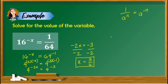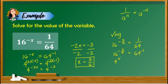To check if x equals 3 halves is correct, substitute into the original equation: 16 raised to negative 3 halves equals 1 over 64. Rewrite 1 over 64 as 64 raised to negative 1, and rewrite with base 4: 4 raised to 2 times negative 3 halves equals 4 raised to 3 times negative 1. Simplifying the exponents — canceling the 2 — gives 4 raised to negative 3 equals 4 raised to negative 3. So 3 halves is the solution.